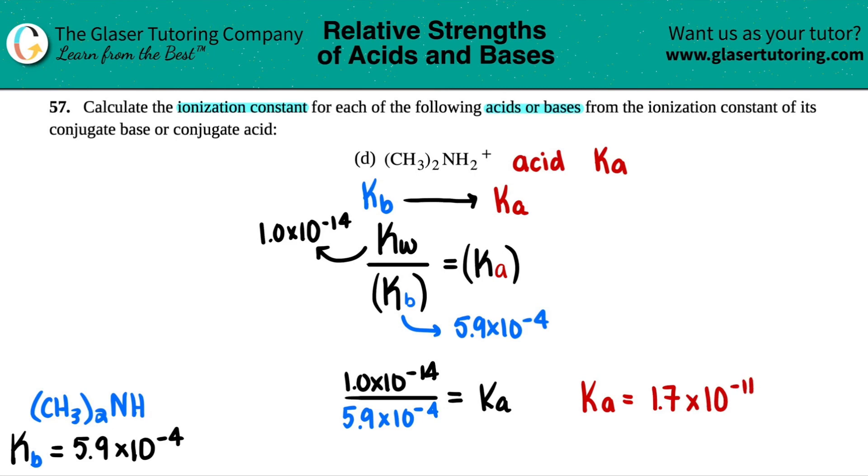And there you go. That would be the corresponding Ka value, the ionization constant for the acid. That's it.